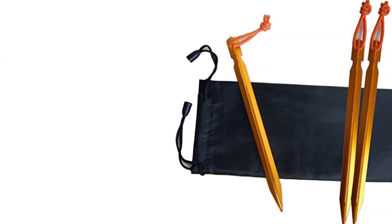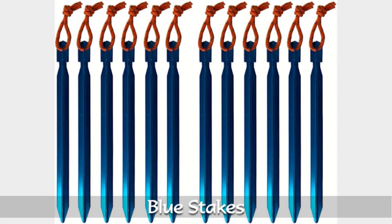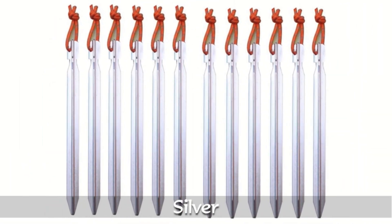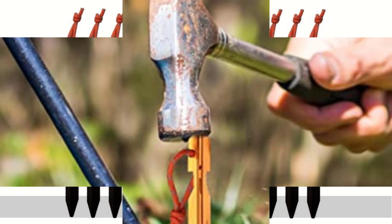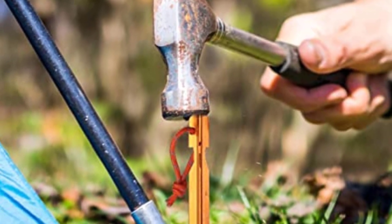They also have a pointed end that makes it easy to drive them into the ground, and a hook on the top that allows you to easily secure your tent or other equipment. One of the standout features of these stakes is their versatility. They are suitable for use on a variety of terrains, including hard and rocky ground. They are also rust-resistant, ensuring that they will last for many camping trips to come.